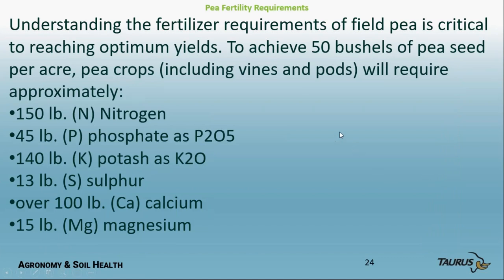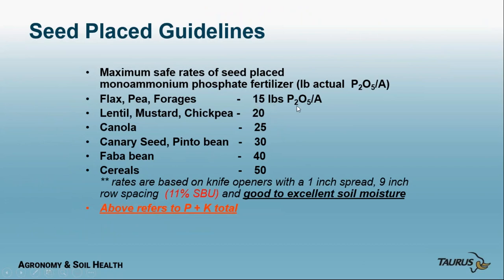So to grow 50 bushels of peas we need 150 pounds of N, plus lots of P, lots of K, and lots of calcium. There is a limit on how much phosphorus you want to put in with peas — peas are quite sensitive to nutrients in the seed row. Side-banding is much better, and good soil moisture helps. Many growers are considering not putting much in the seed row, or putting in a liquid treatment with low nutrient levels to provide feeding sites and supplement early growth.